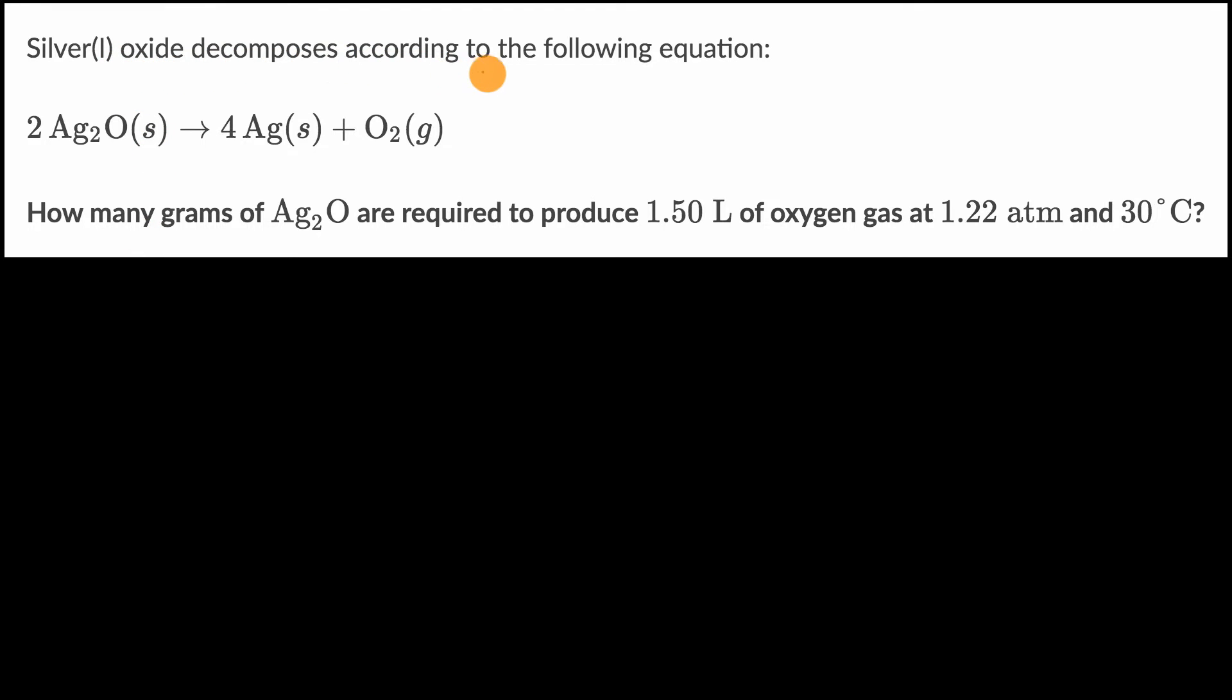Silver oxide decomposes according to the following equation: 2 Ag₂O(s) → 4 Ag(s) + O₂(g). How many grams of Ag₂O are required to produce 1.50 liters of oxygen gas at 1.22 atmospheres and 30 degrees Celsius?